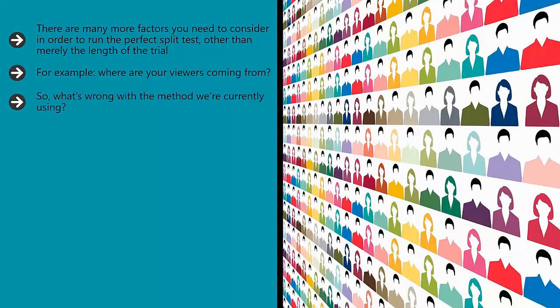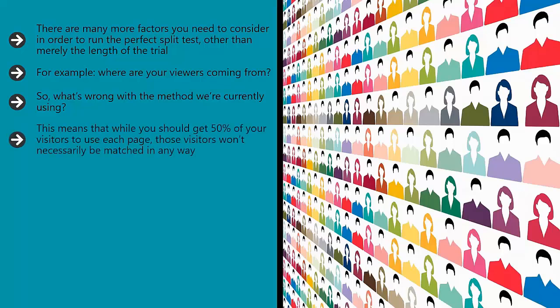So what's wrong with the method we're currently using? Well, if you use the redirect method described earlier in this training, then you'll essentially be sending visitors to one of two websites based on completely random chance — it's effectively a coin toss. This means that while you should get 50% of your visitors to use each page, those visitors won't necessarily be matched in any way. Pure chance might mean that everyone from Asia ends up on one version of your website while everyone from the U.S. ends up on another, which can skew your results owing to cultural differences.